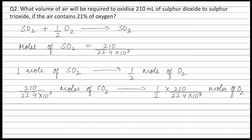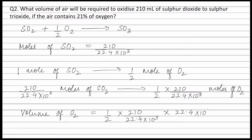Now we know the moles of oxygen, therefore we can find out the volume of oxygen. Volume of oxygen equals moles of oxygen, that is ½ × 210 / (22.4 × 10³), multiplied by molar volume, that is 22.4 × 10³. This simplifies to 210 / 2 milliliters, which equals 105 ml.